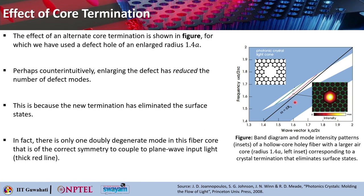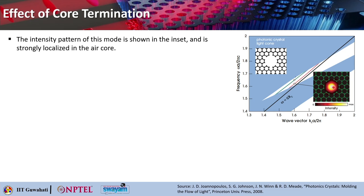This is because the new termination is able to eliminate the surface states. In fact, there is only one doubly degenerate mode in this fiber core that is of the correct symmetry to couple to plane wave input light, as you can see in the thick red line. You can also see this particular mode profile that basically shows a beautiful mode appearing only in the center of the air core. This will be a perfect mode to guide your light signals because there is nothing close to the termination edges, so the scattering losses will be really low.